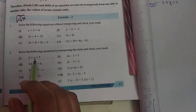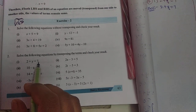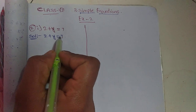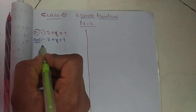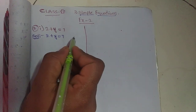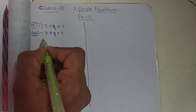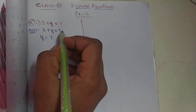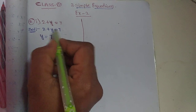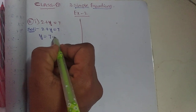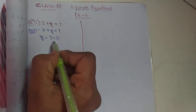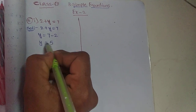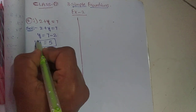First one: 2 plus y is equal to 7. Here 2 plus y is equal to 7, so we find the Y value. The 2 is on the left side, so we transpose it to the right side. 2 becomes minus 2, so y is equal to 7 minus 2.